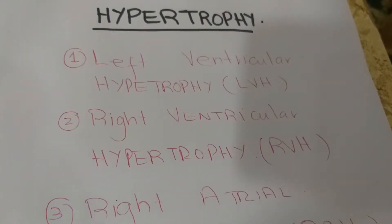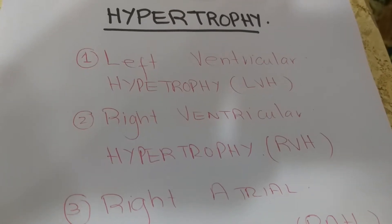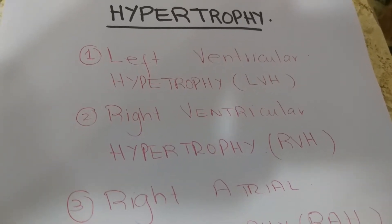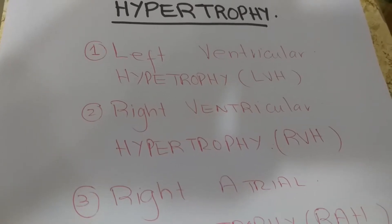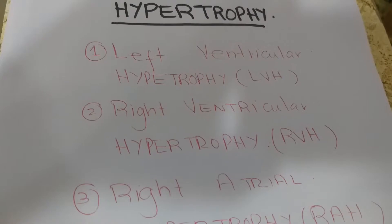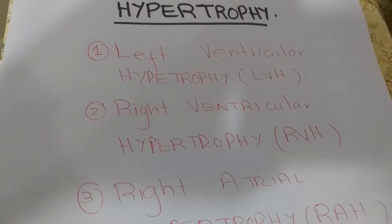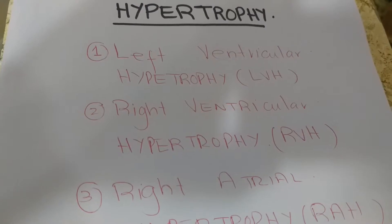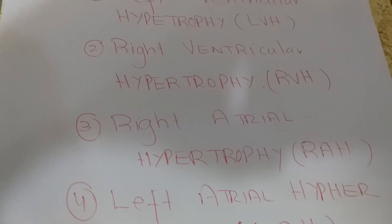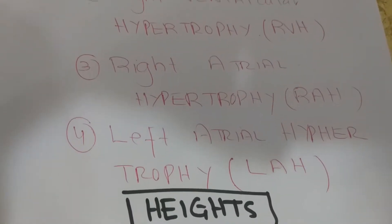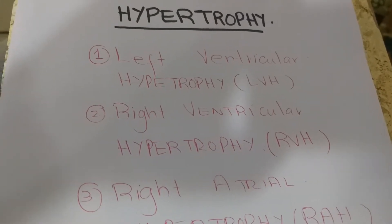Another very important thing we can understand by looking at the ECG is the concept of hypertrophy of the different chambers of the heart. There are four chambers: left ventricle, right ventricle, left atrium, and right atrium. Just by looking at the ECG paper we can calculate certain measurements which tell us whether there is hypertrophy of different chambers. There are four types: LVH, RVH, RAH, and LAH.